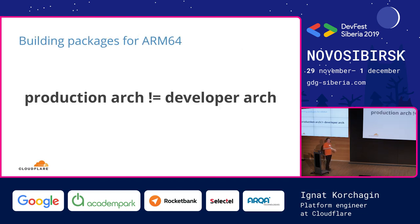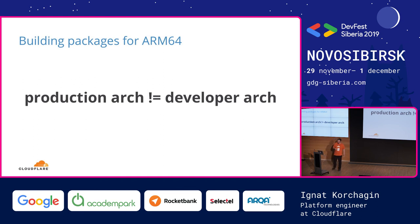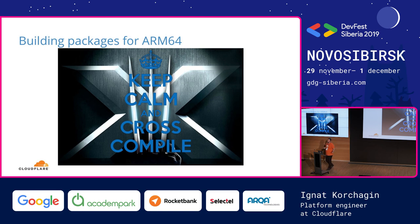The real problem when adopting a second CPU architecture is that the production architecture is not the same as the developer architecture. You have ARM64 servers, but developers still have x86 laptops. The typical solution is cross-compilation. Anyone here doesn't know what cross-compilation is? Whoever has used a cross-compiler?